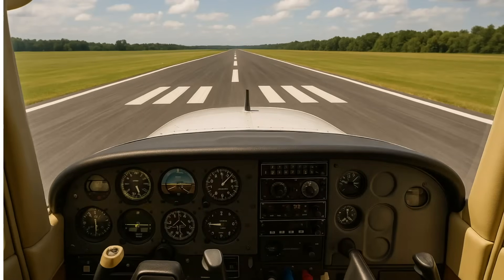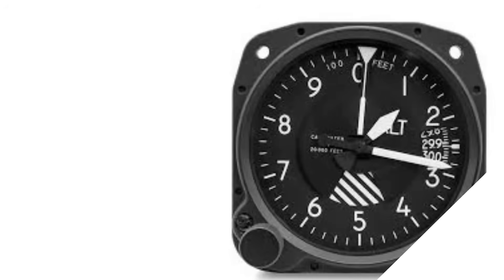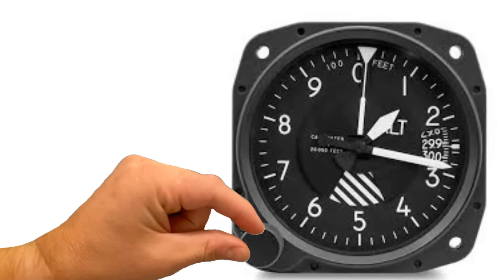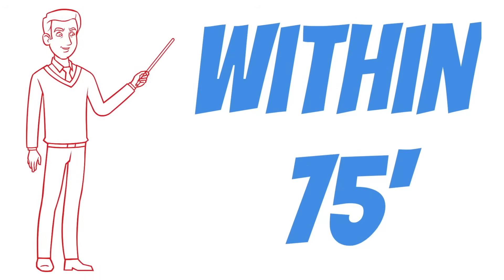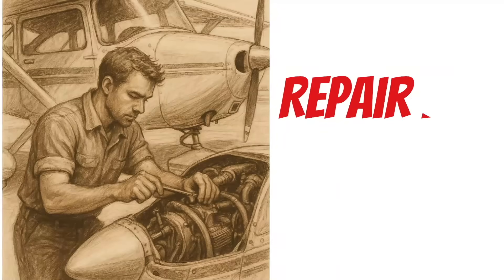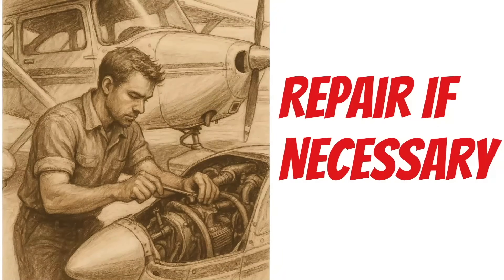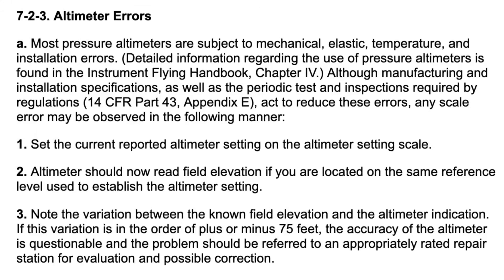Some airports have information signs that can give you something accurate to compare to. If not, you'll want to compare your altimeter to a known field elevation. After you find a known elevation, all you have to do is dial in the local setting and check your indicated altitude against this elevation. The indicated altitude should be within 75 feet of the actual field elevation. If it's not, you should take the aircraft to a maintenance facility to have them check it out and repair the altimeter if necessary. The AIM mentions it as a good practice in section 7-2-3.